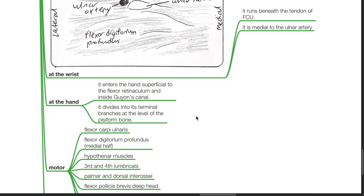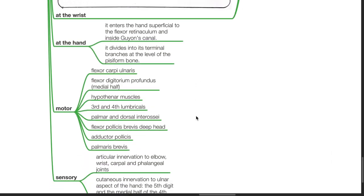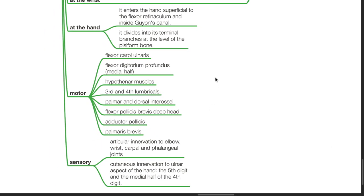Motor supply includes flexor carpi ulnaris, flexor digitorum profundus medial half, hypothenar muscles, third and fourth lumbricals, palmar and dorsal interossei, flexor pollicis brevis deep head, adductor pollicis, and palmaris brevis.